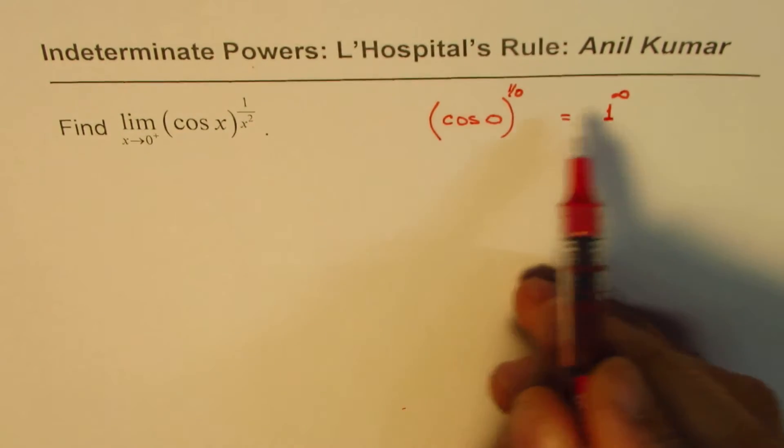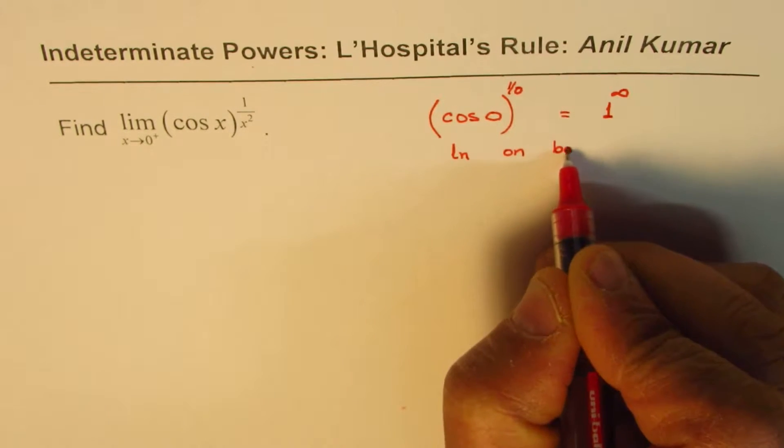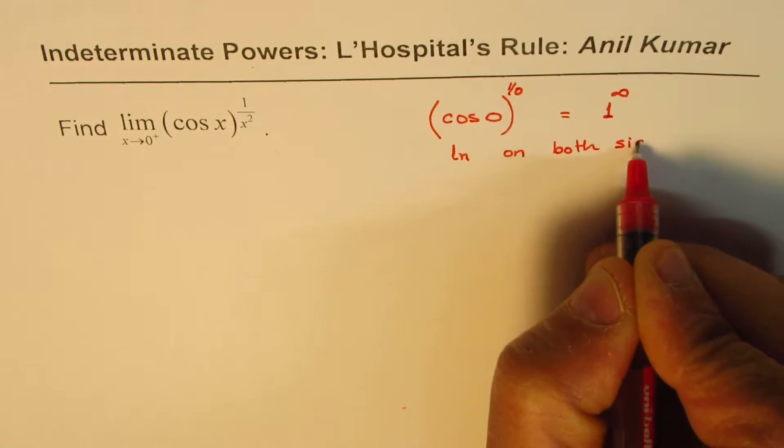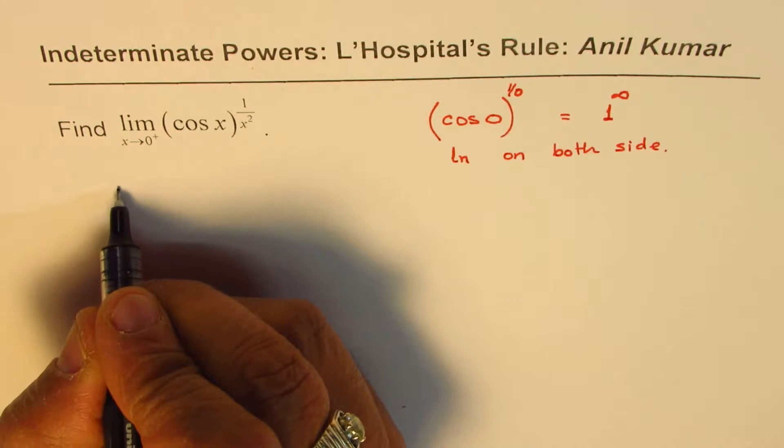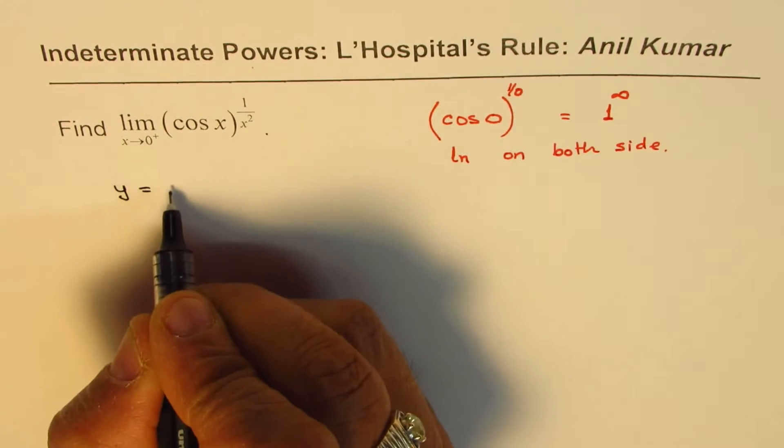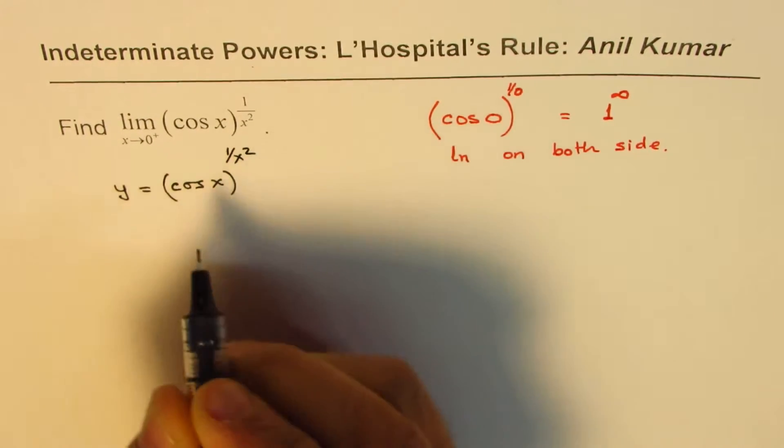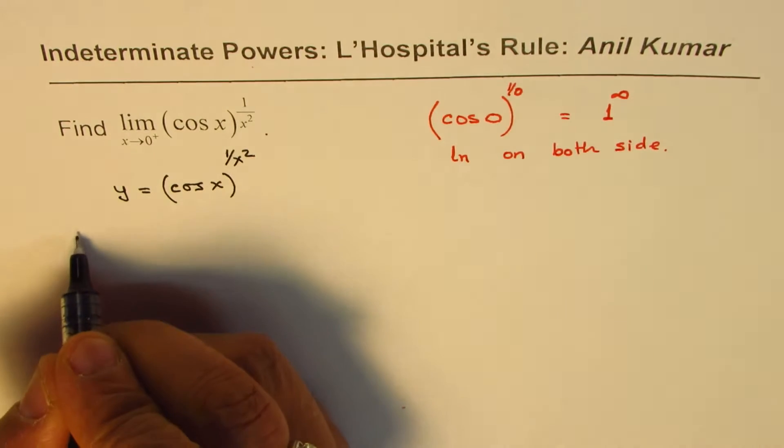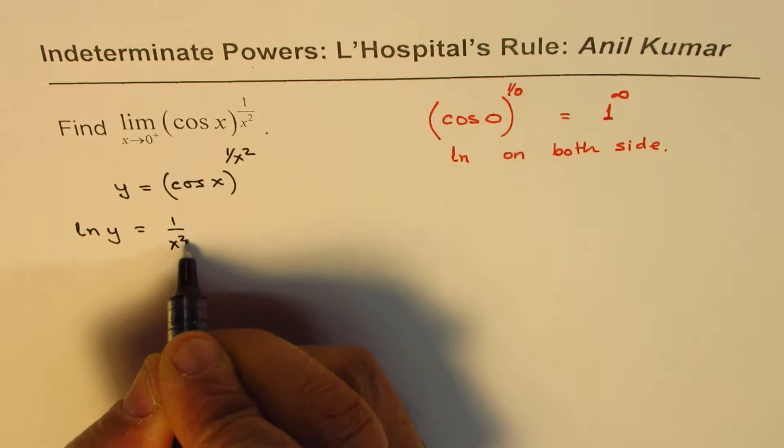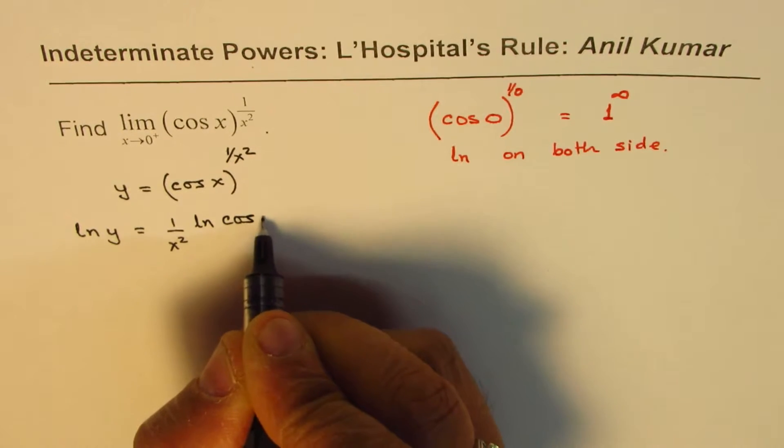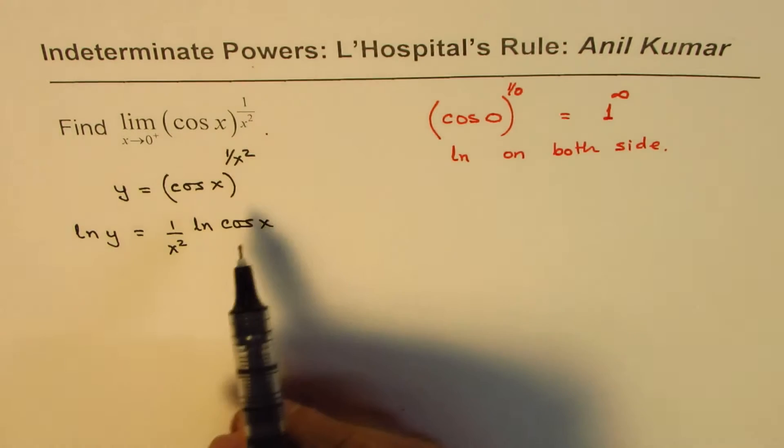Now to solve such limits, we have to take natural log ln on both sides. And that is how we could solve this kind of equation. So let's redefine our function as y equals cos of x to the power of 1 over x squared. If I take natural log on both sides, I get ln y equals 1 over x squared ln cos x. So that is how we solve such questions.